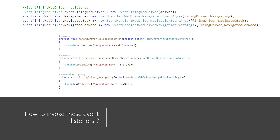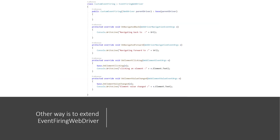You then write the handler methods — that is where the logic for that particular event goes. You might put a console message to confirm the method is being invoked. If your code is getting cluttered with these handlers and you want to keep them in a separate file, you can create your own custom event firing class that inherits from EventFiringWebDriver and write the code there.